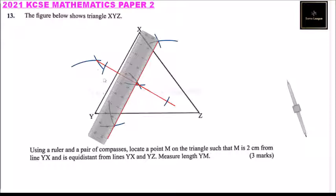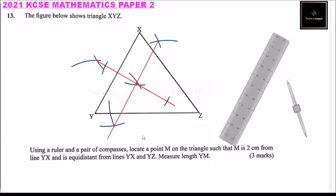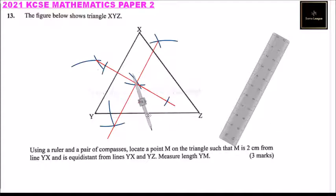So that is the line — this line is two centimeters from the line YX. Then, since we are told that M is equal distance from YX and YZ, we bisect this angle.